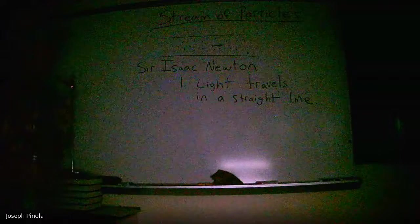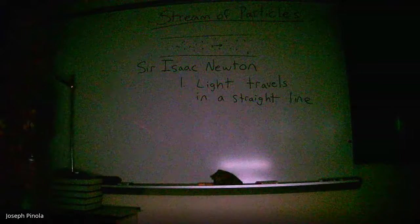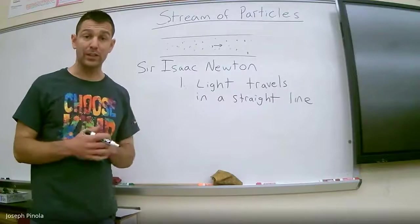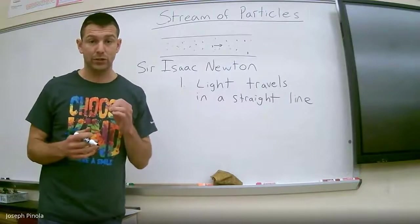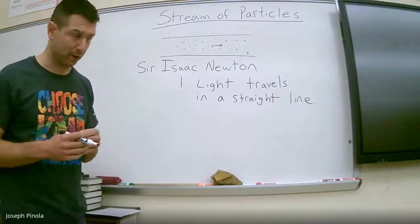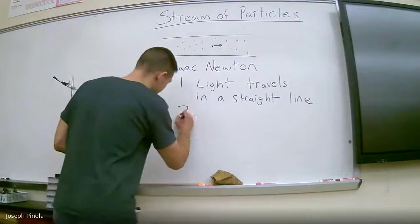This is really clear evidence that light definitely travels in a straight line. And according to Isaac Newton, that was one of the reasons that light must be considered a particle. So Isaac Newton believed that light traveled in a straight line and that therefore made it a stream of particles. But he had a second reason to make this claim.